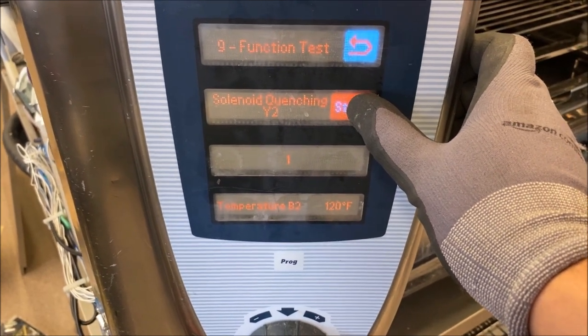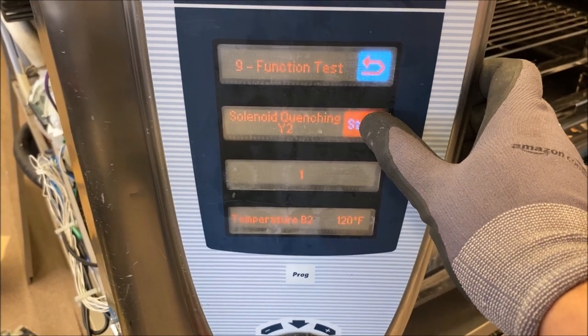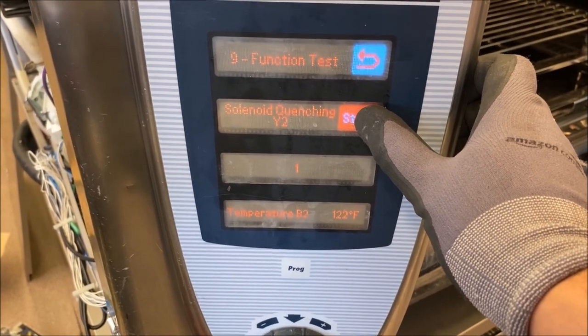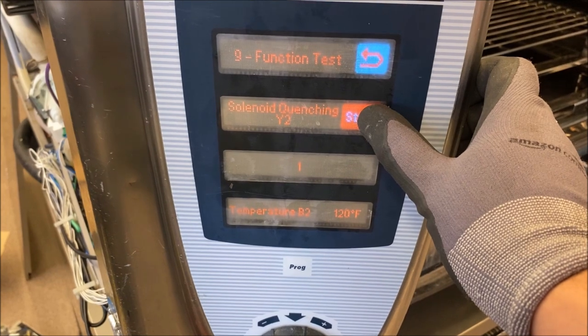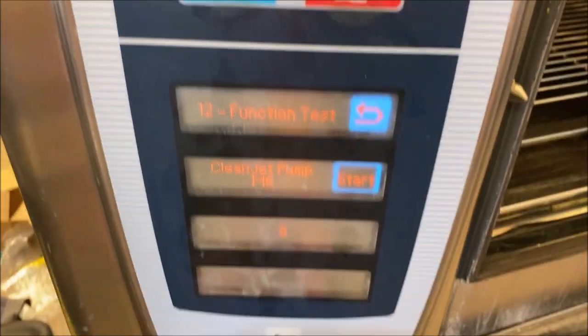Let's fill up our quenching box by activating our quenching solenoid. Let's just hold this down for 10-15 seconds, get it really filled up so that the pump can pick up the water, and then we're going to physically watch the water come through into the oven.